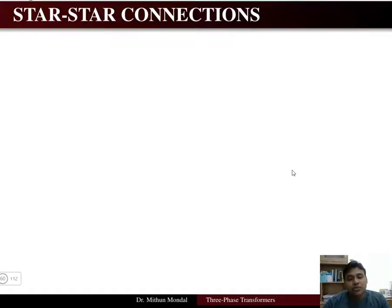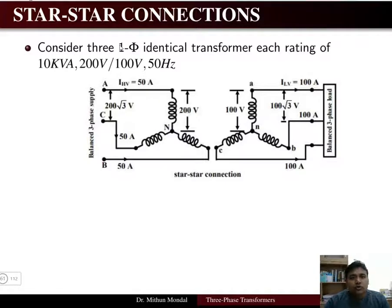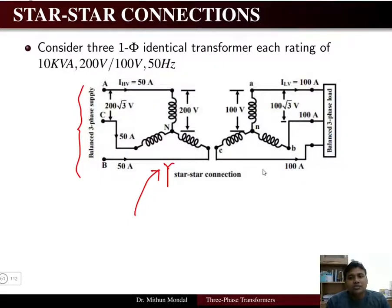The first connection we are going to examine is the star-star connection. In a star-star connection, the primary voltage is connected in star and the secondary voltage is also connected in star. A balanced three-phase supply is connected in star form on the primary, the secondary is also in star, and a balanced three-phase load is connected on the secondary.